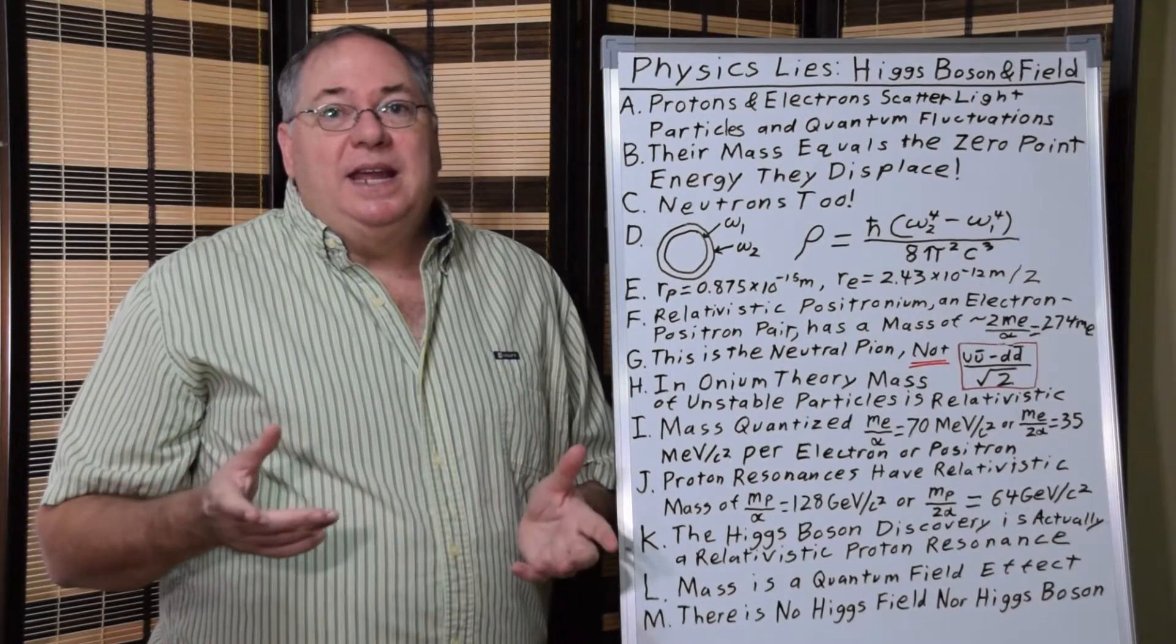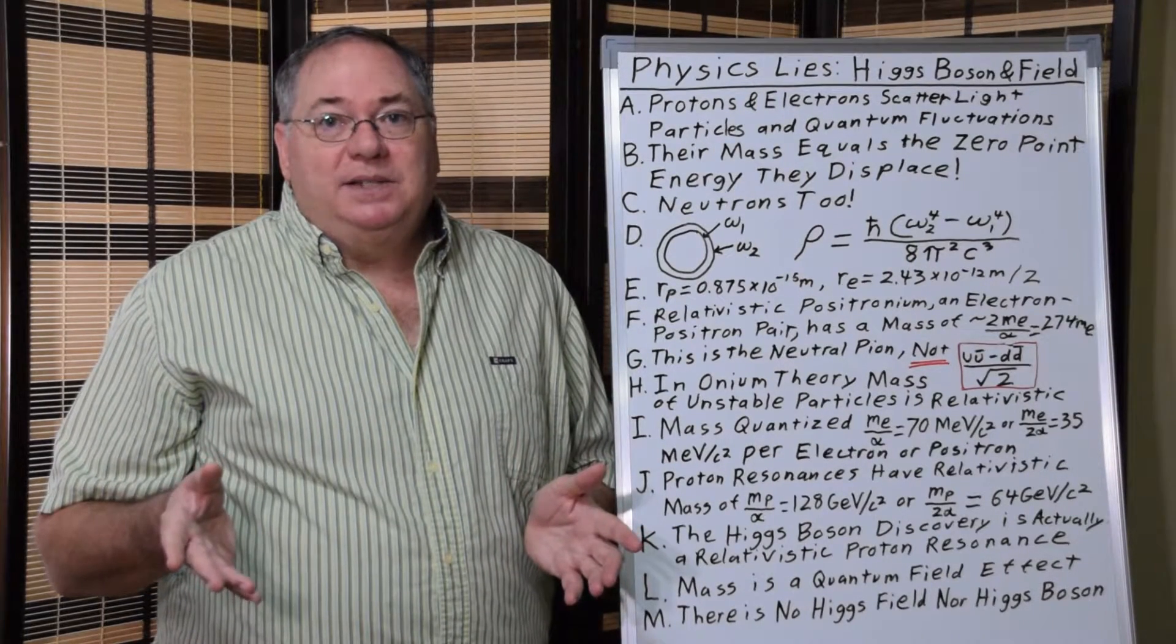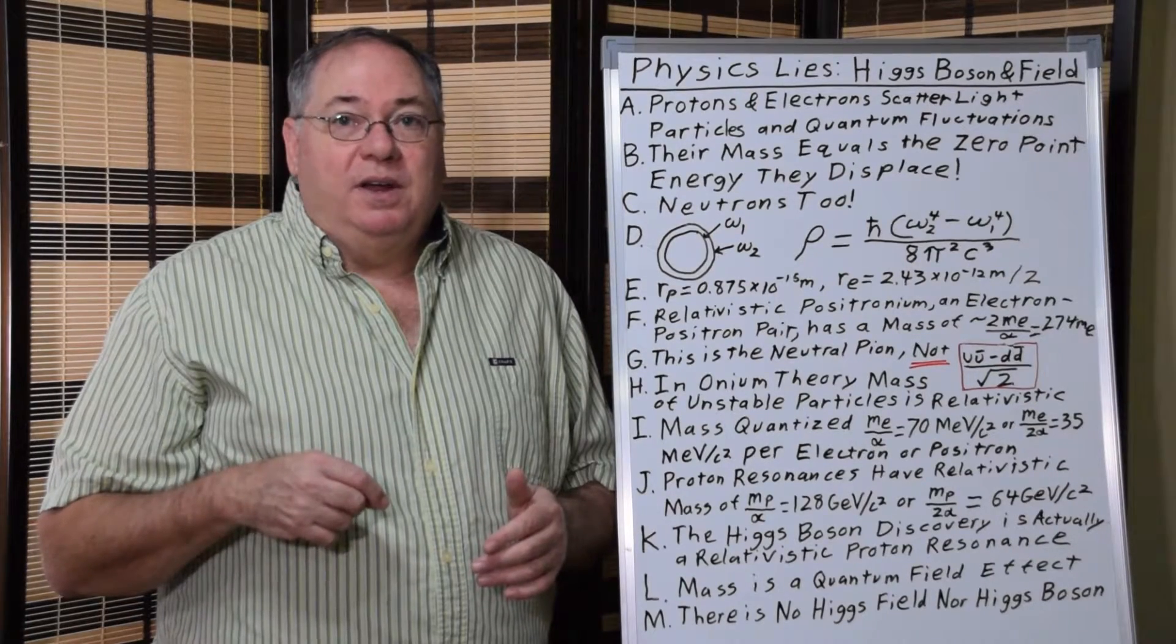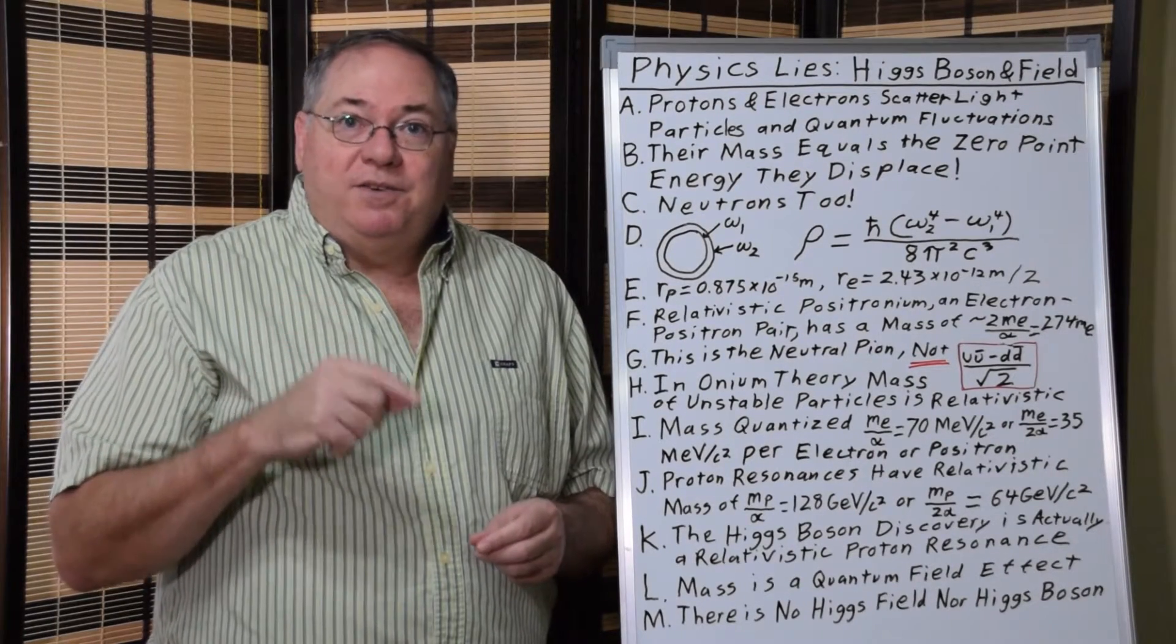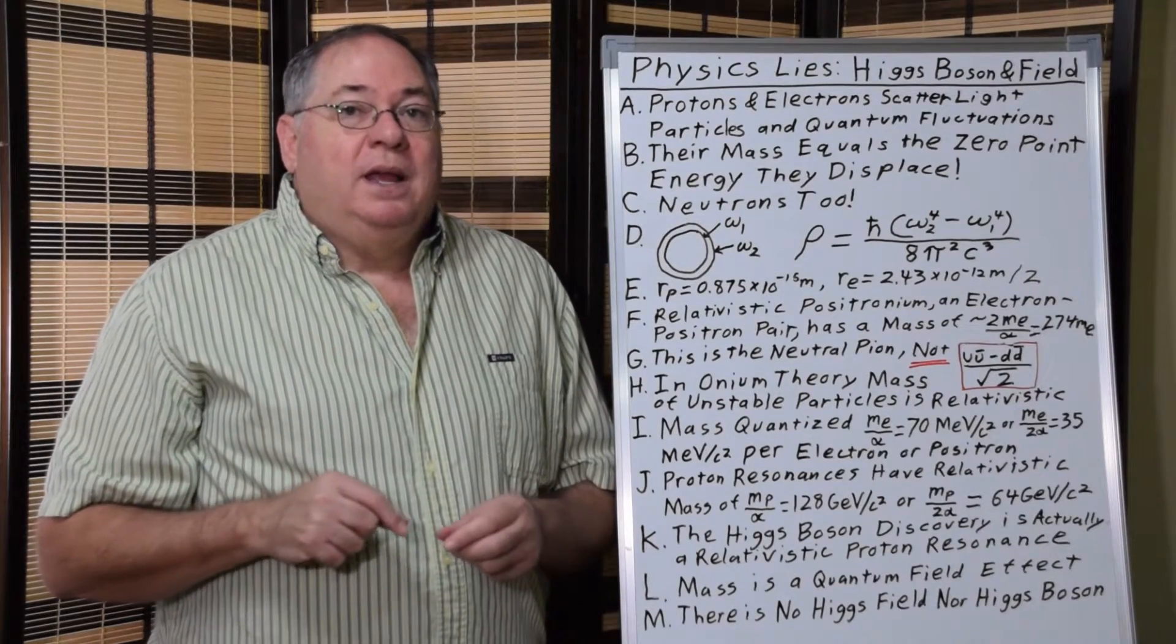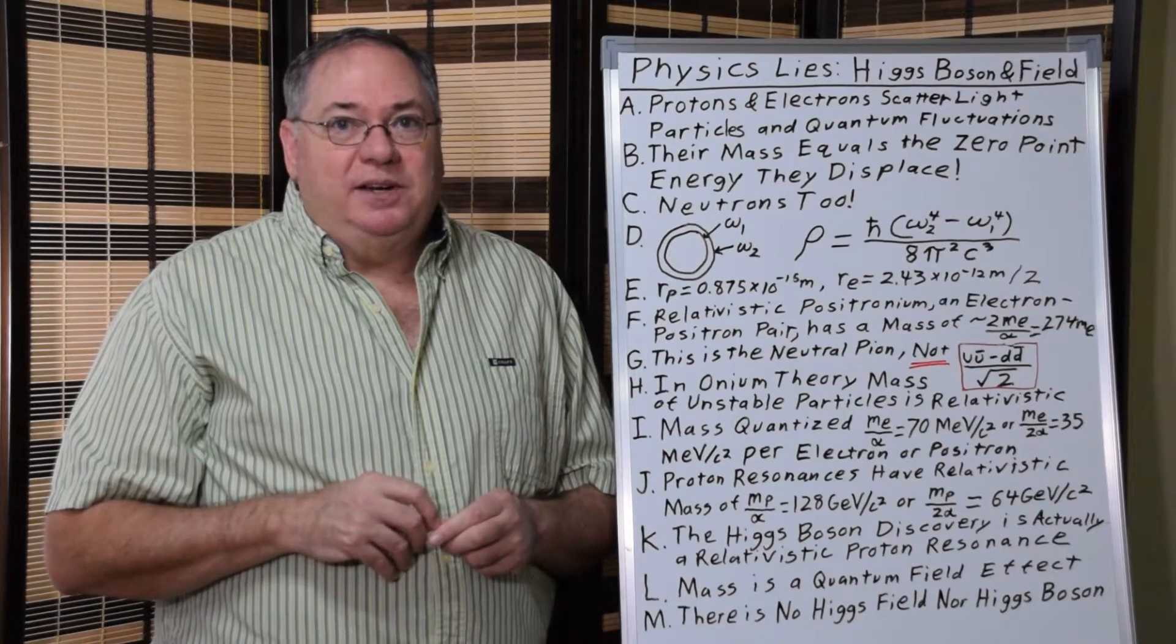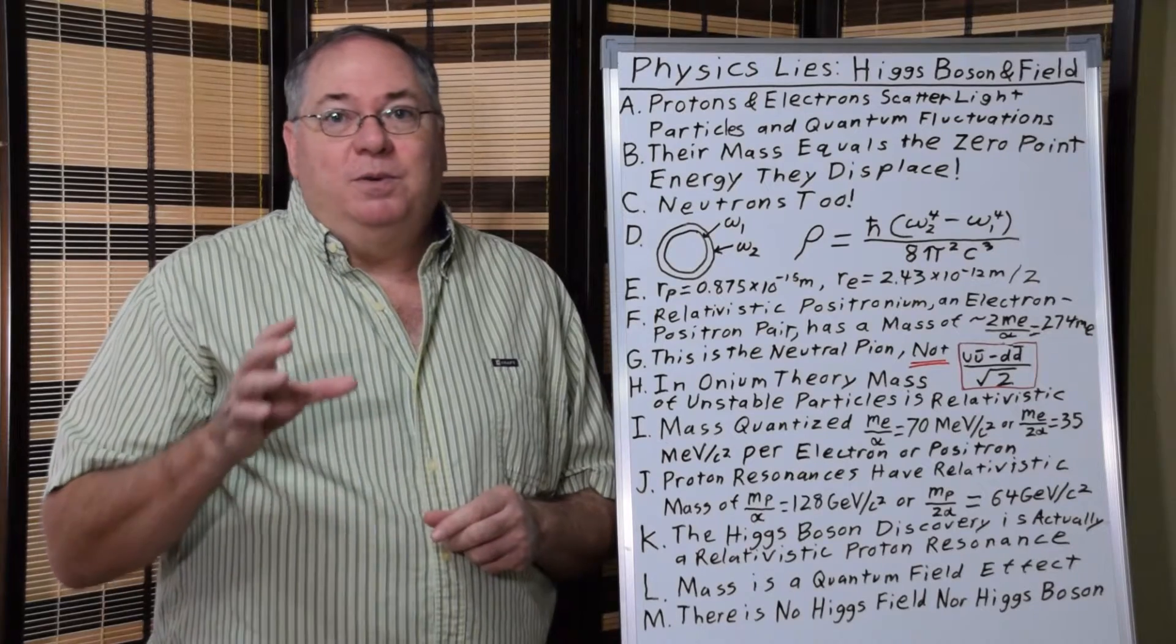So we can easily account for the mass of all the unstable particles as relativistic mass. And that comes about because there's quantization at 35 MeV and 70 MeV, which is a factor of the electron mass divided by the fine structure constant and the electron mass divided by the fine structure constant divided by 2. And the fine structure constant is just the term that gives us the relativistic mass energy on average. Some refinement of the equations needed on a particle by particle basis.